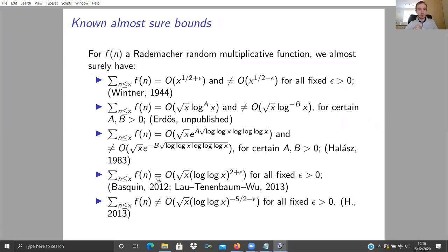Most recently, the upper bound was improved to roughly sqrt(x) (log log x)^2 by Pascoe and Lau-Teng, Obama Wu — not really independently, as they knew what each other were doing. This is by improving the treatment of the moment in Halász's upper bound, introducing a splitting device that makes the moment calculations more efficient. I proved that the sum is almost surely not O(sqrt(x) / (log log x)^{5/2}), by improving the estimation of the random Euler product in Halász's lower bound using tools from Gaussian process theory.